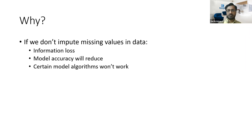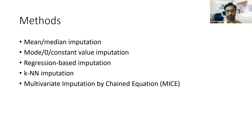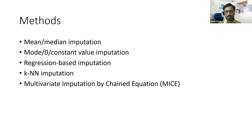All these problems present us with the need to know how best to do missing value imputation. There are five methods used today. The first two — mean/median imputation and mode/zero/constant value imputation — are the most commonly used. Regression-based imputation is a little more advanced. The fourth and fifth methods are fairly advanced and less frequently used.